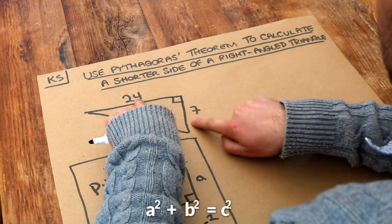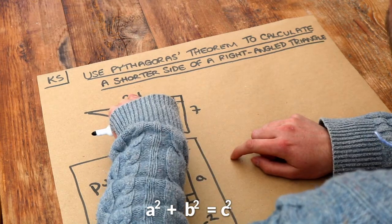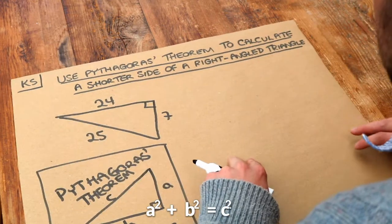For example, if you take the two shorter sides squared, you have 7 squared and 24 squared, and you add them together, that would give you 25 squared.